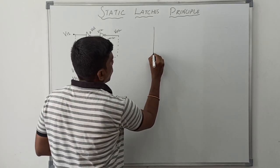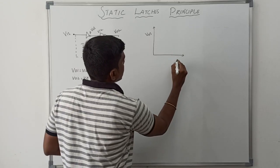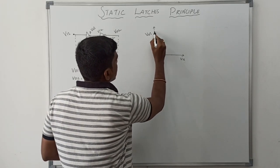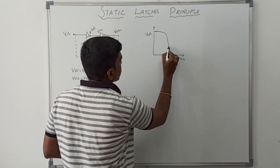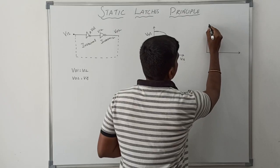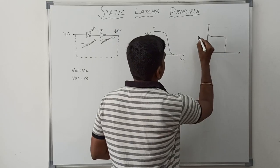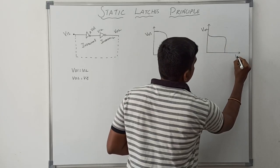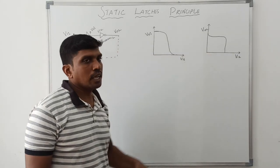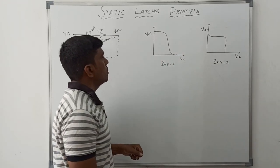Now I draw the voltage transfer characteristics for inverter 1 and inverter 2. The Y-axis represents VO1 and the X-axis represents the input value V1. The first inverter voltage transfer characteristics look like this. Now I draw the second inverter voltage transfer characteristics — the Y-axis represents output voltage and the X-axis represents input voltage.